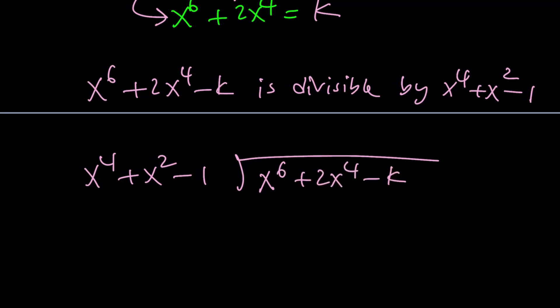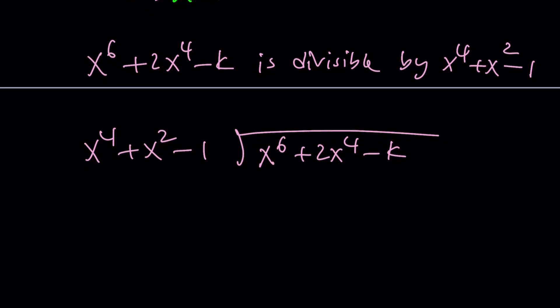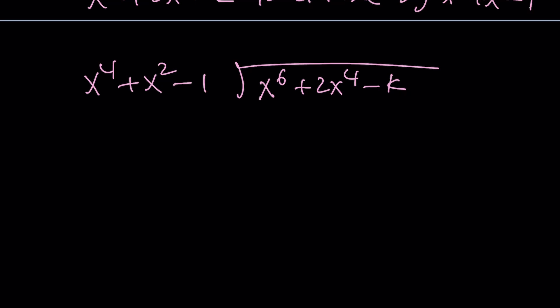So now we're going to do the following. How many times x to the 4th goes into x to the 6? x squared times. And we're going to distribute here. It's going to give us x to the 6 plus x to the 4th minus x squared. And then we're going to subtract. Well, we can't subtract, so we're going to add the opposite. In other words, we're going to negate and add. This is going to cancel out x to the 4th plus x squared minus k. Now,